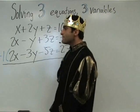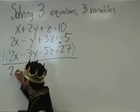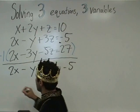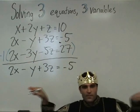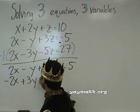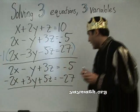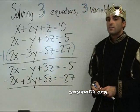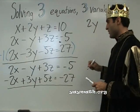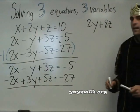Second one. The king doesn't use the steps — the king has a horrible elevator. 2x minus y plus 3z equals negative 5. Now, what's this part? Negative 2x plus 3y plus 5z equals negative 27. Very good. Now let's add these two up, and once we add them, observe the x's will cancel each other out, leaving 2y plus 8z equals negative 32.